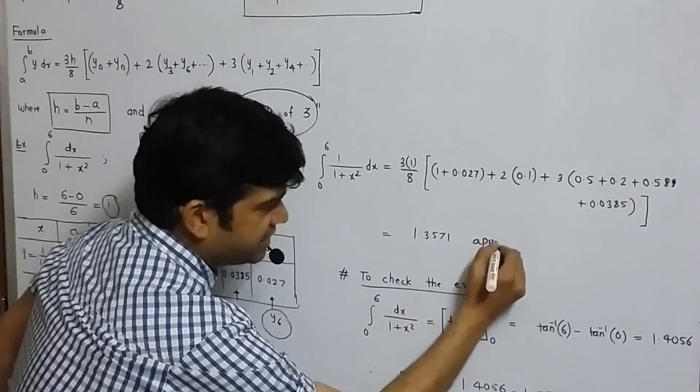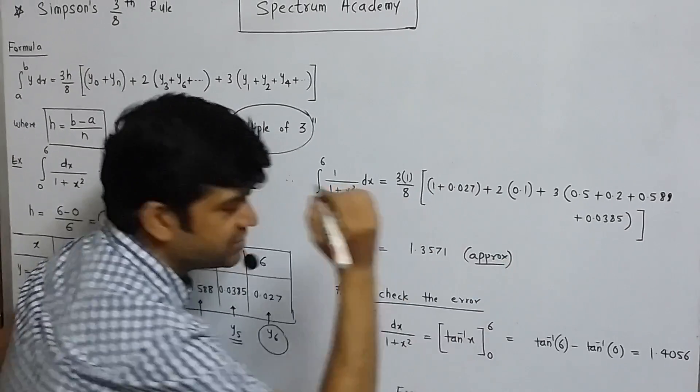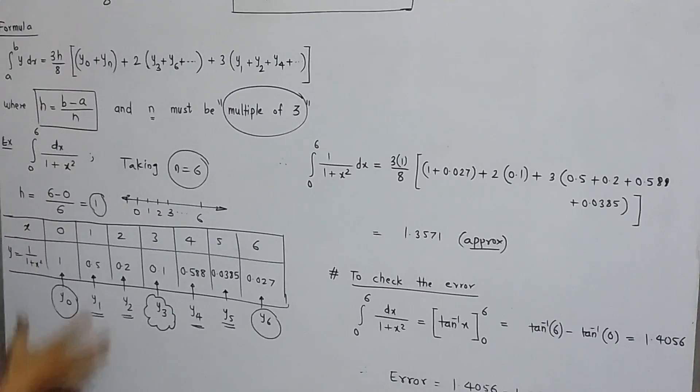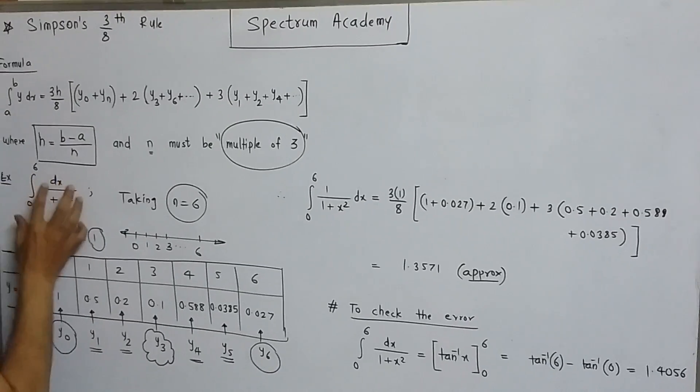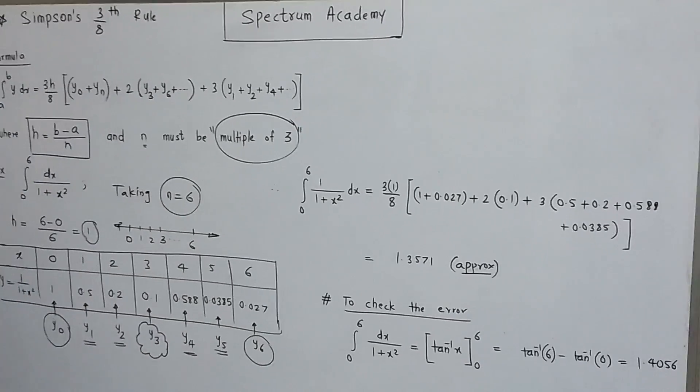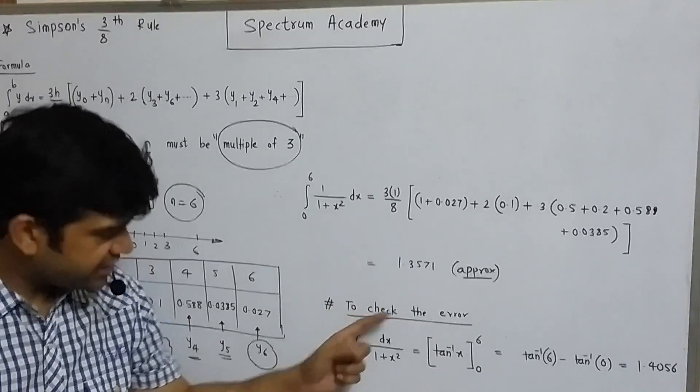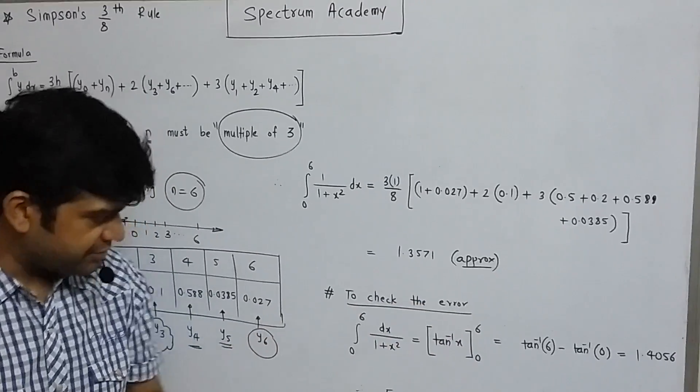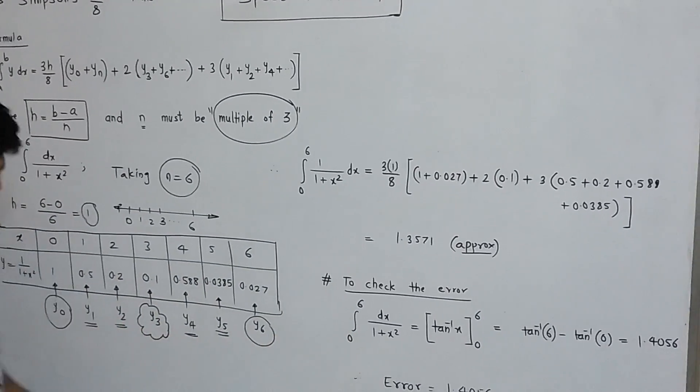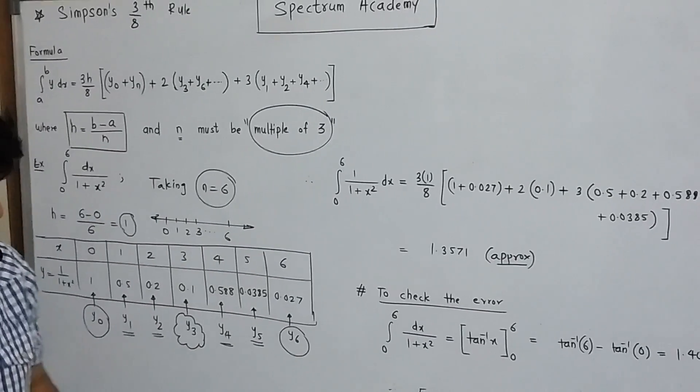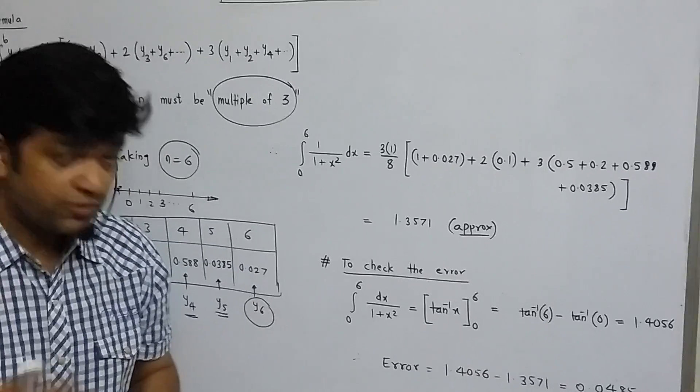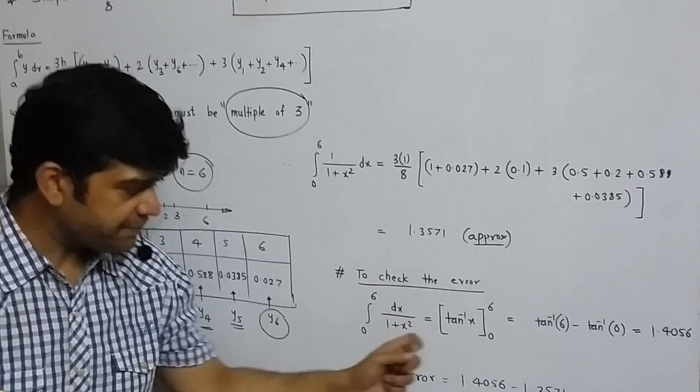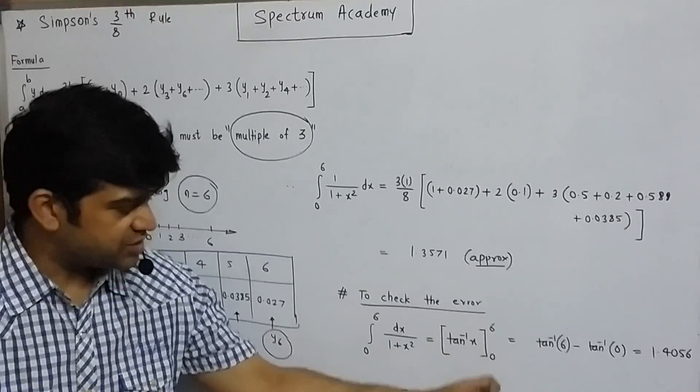And this is remember my dear friend is approximate answer. Now in exams sometimes what they do is they ask us to evaluate the integral using Simpson's 3 by 8 rule and they ask us to check the error because this is approximate answer. So what is the error? To find out error we calculate the given integral using the process of integration. For example here 0 to 6, 1 upon 1 plus x square will be tan inverse x from 0 to 6.